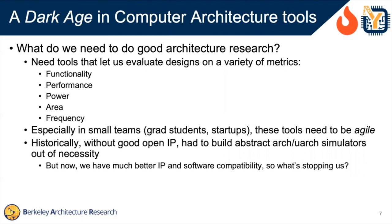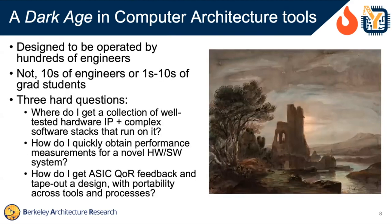The world has changed a lot recently. We have a lot of good IP showing up in open source and software compatibility that lets us run big software stacks on top. The question is what's stopping us from doing good research using all these tools. It's essentially how the tools were designed — generally designed to be operated by large groups of engineers in industrial environments rather than 10 engineers or a few grad students in a lab. There are basically three hard questions the tools need to answer: first, where are we going to get a collection of IP that works together — not just hardware IP but also software IP. Second, how do we actually get performance measurements out of these designs? If you can only run it at one or five kilohertz, we can't run big software stacks.